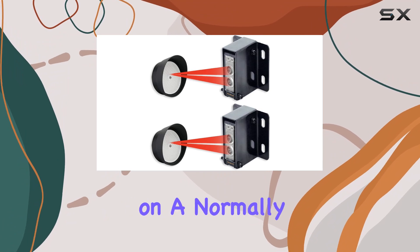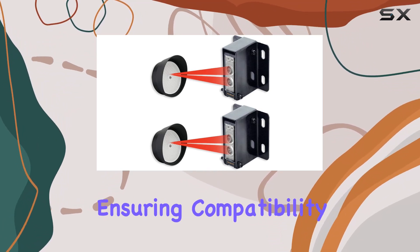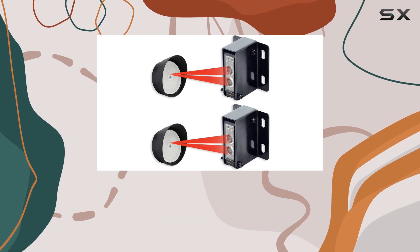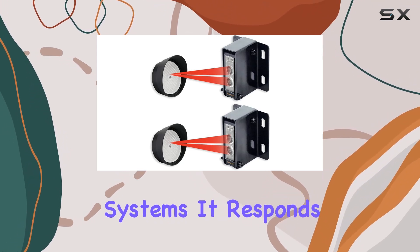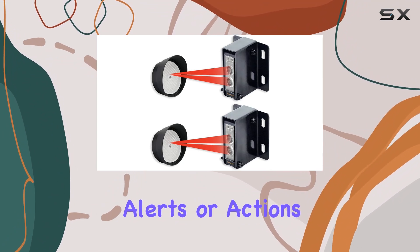The Sec Alarm Sensor operates on a normally closed NC circuit with a 10K Omega resistor, ensuring compatibility with a wide range of security systems. It responds promptly to movement within its range, triggering alerts or actions as needed.